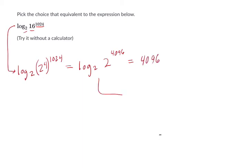But that's not obvious, right? Because that's saying 2 to what power is 2 to the 4,096? It's 4,096.